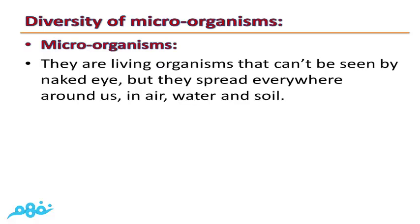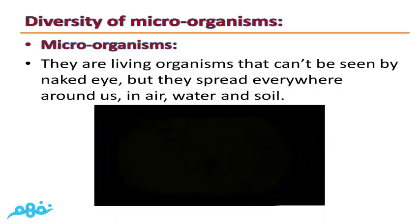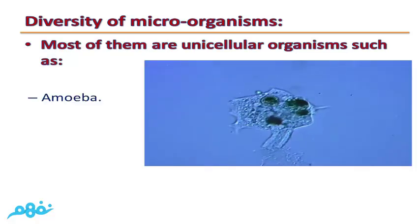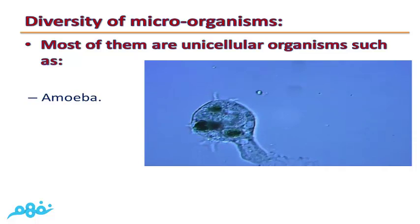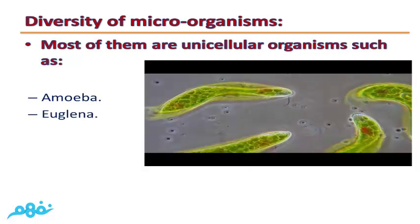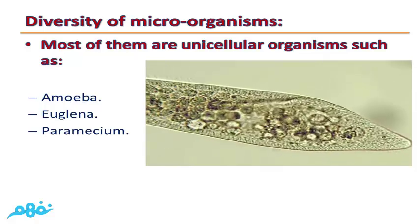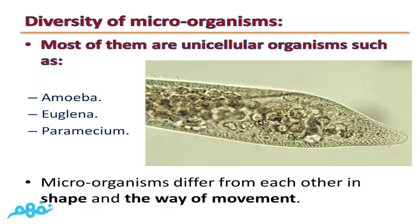Microorganisms are living organisms that can't be seen by the naked eye, but they spread everywhere around us — in air, water, and soil. Most of them are unicellular organisms, such as Amoeba, Aeglina, and Paramecia. They can be seen only by using a microscope. Microorganisms differ from each other in shape and in the way of movement.